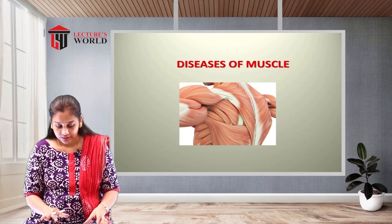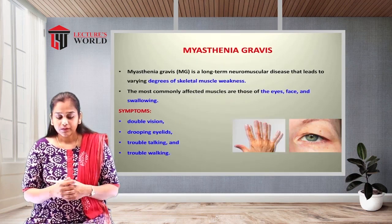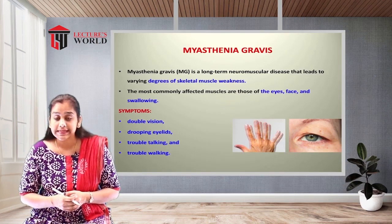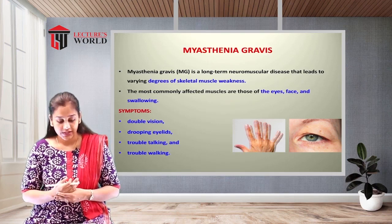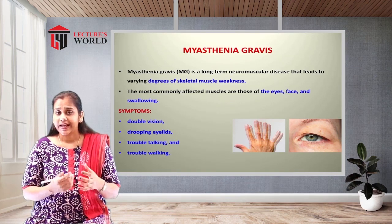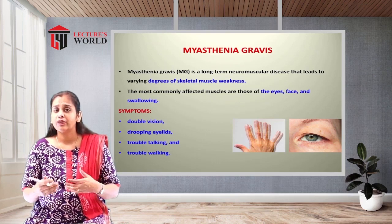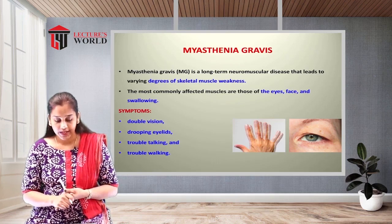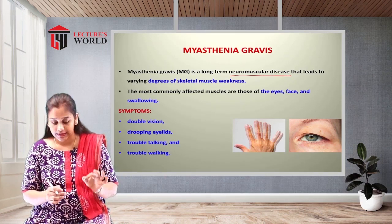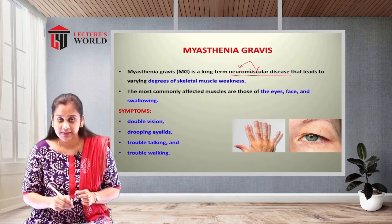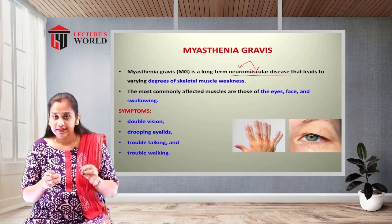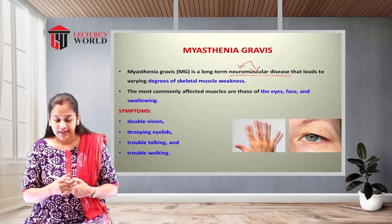The first condition or abnormality of the muscles is known as myasthenia gravis, represented as MG in clinics. So when you see 'MG' written by a doctor, you should understand this is myasthenia gravis. It is a long-term neuromuscular disease, affecting both the neuro and muscular systems.